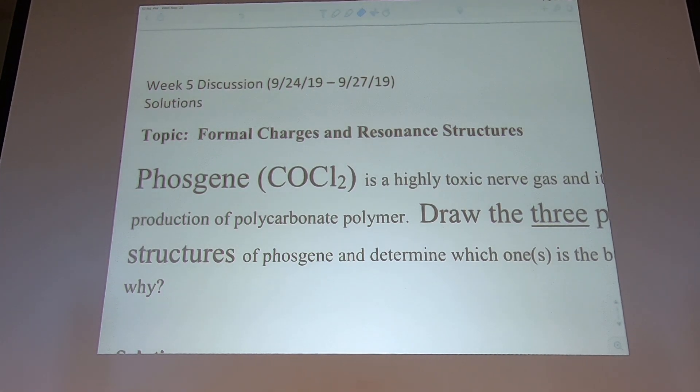This is phosgene gas, COCl2. This is actually a poison gas used during World War II, but it's also being used to make polycarbonate, which is bulletproof glass. So this is actually a compound that we use to make polycarbonate plastics.